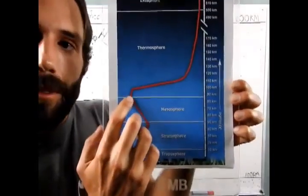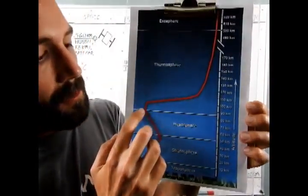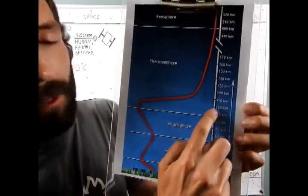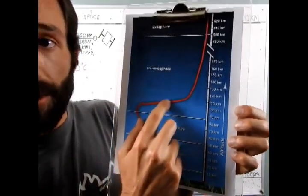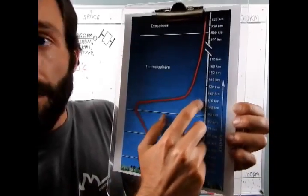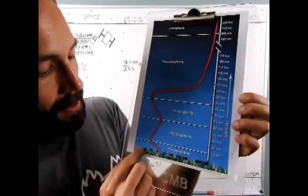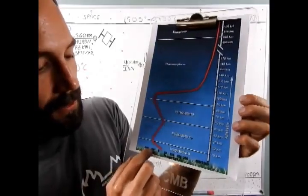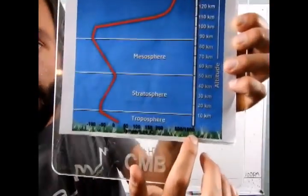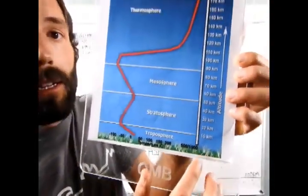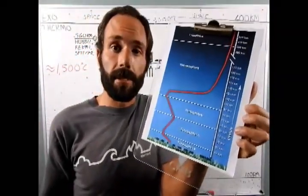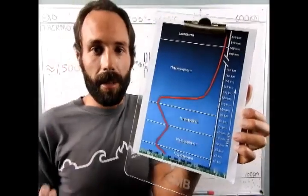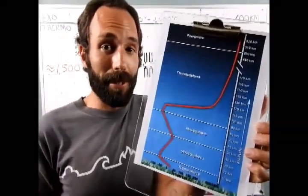And then when you cross into the thermosphere, though, the temperature starts to slightly increase from about 90 to 100 kilometers, based on this chart. And then it rapidly increases. It shoots up over 20, 30 kilometers from negative 100 degrees, up to about 500, 1500 per this chart. Some say 2,000 degrees Celsius. Some say 2,500 degrees. There's all kinds of numbers out there, but everybody can agree that it's really, really hot.